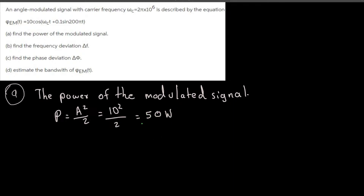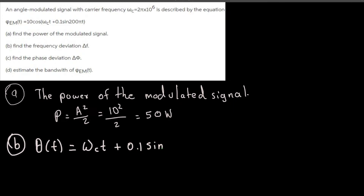That's the answer for part (a). For part (b), we need to find the frequency deviation Δf. To do this, we identify θ(t), which is the argument inside the cosine: θ(t) = ω_c·t + 0.1·sin(205t).